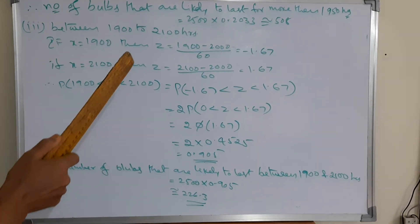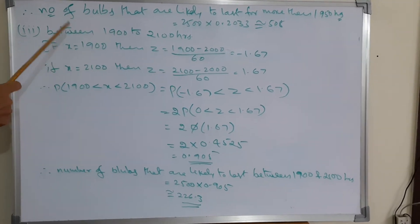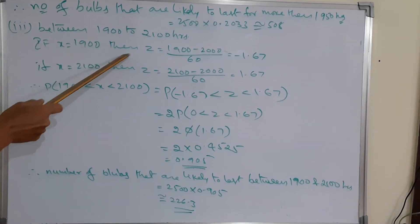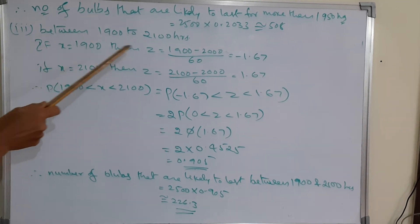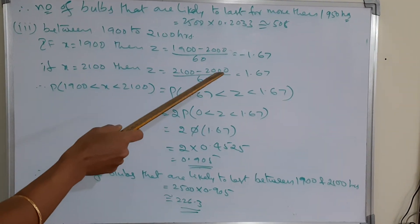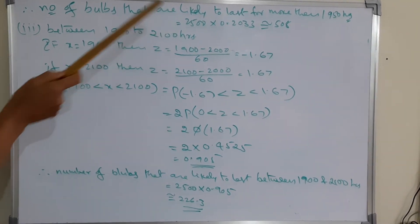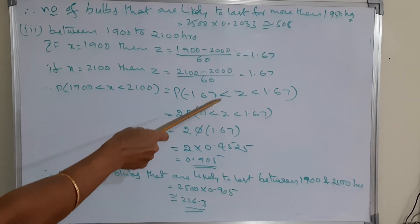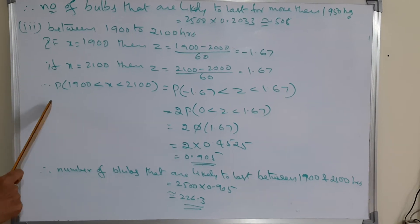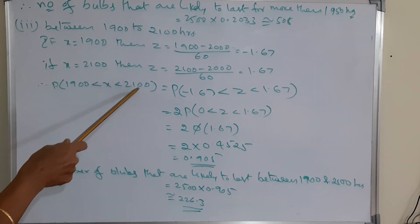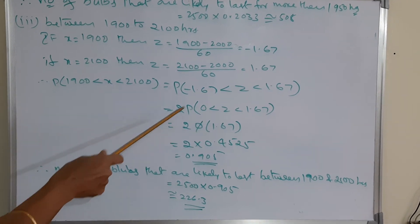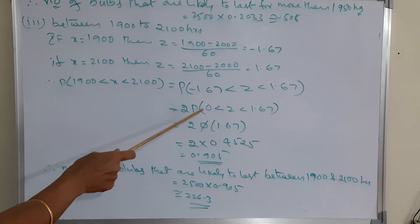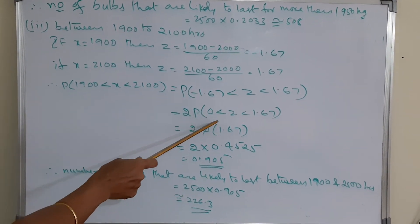Third part: between 1900 to 2100 hours. If x equals 1900, then z equals (1900 minus 2000) divided by 60, which is minus 1.67. If x equals 2100, then z equals (2100 minus 2000) divided by 60, which equals 1.67. Therefore P(1900 < x < 2100) equals P(−1.67 < z < 1.67), which by standard result equals 2 multiplied by P(0 < z < 1.67).